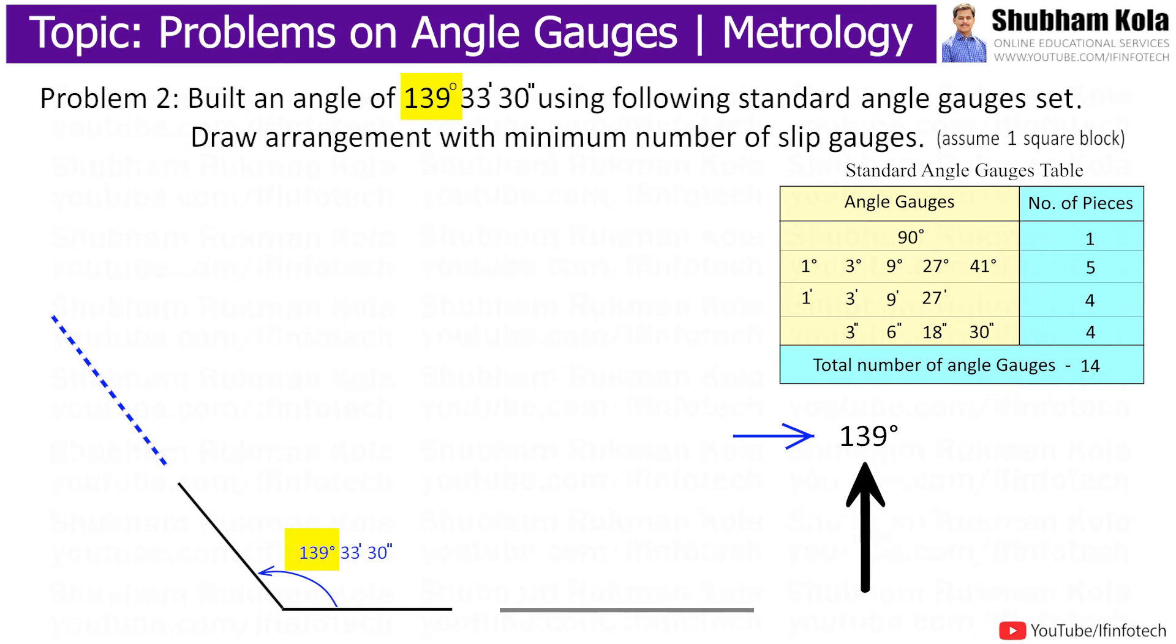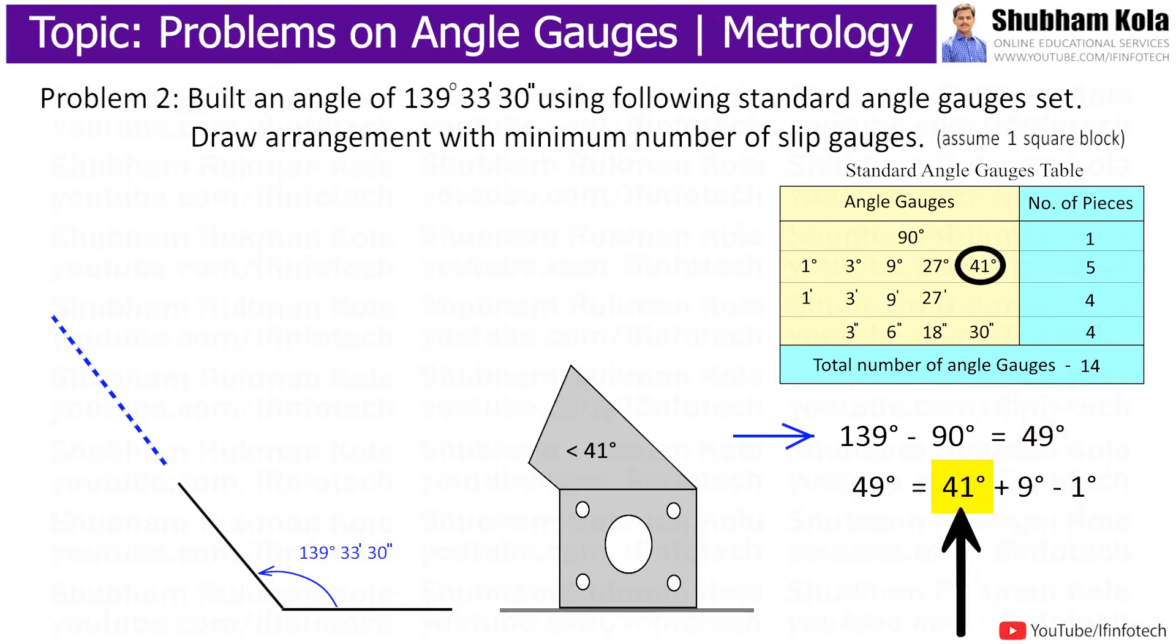To reduce 139 degrees, first I will place a 90-degree square block, then the angle would be 49 degrees. Now to build 49 degrees, I will add 41 degrees and 9 degrees angle gauges, which would be 50 degrees. This is more than 49 degrees, so I will reduce it by 1 degree angle gauge from the standard set.